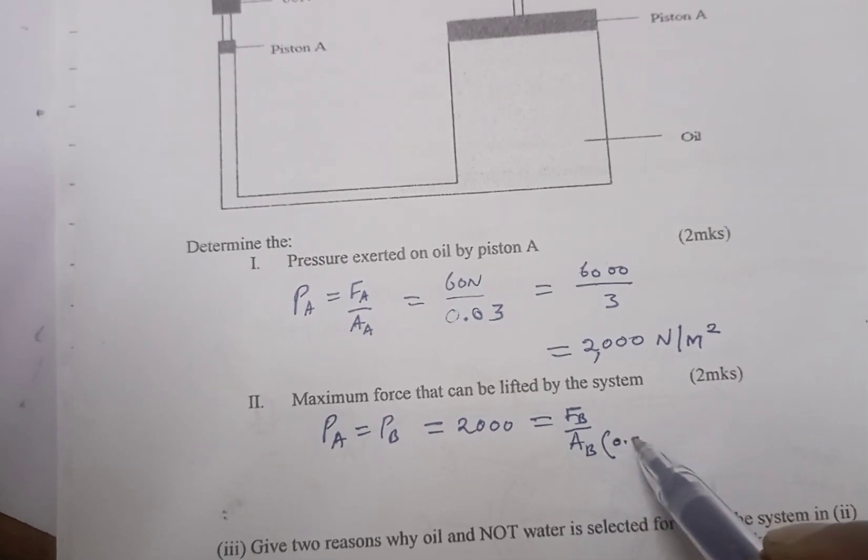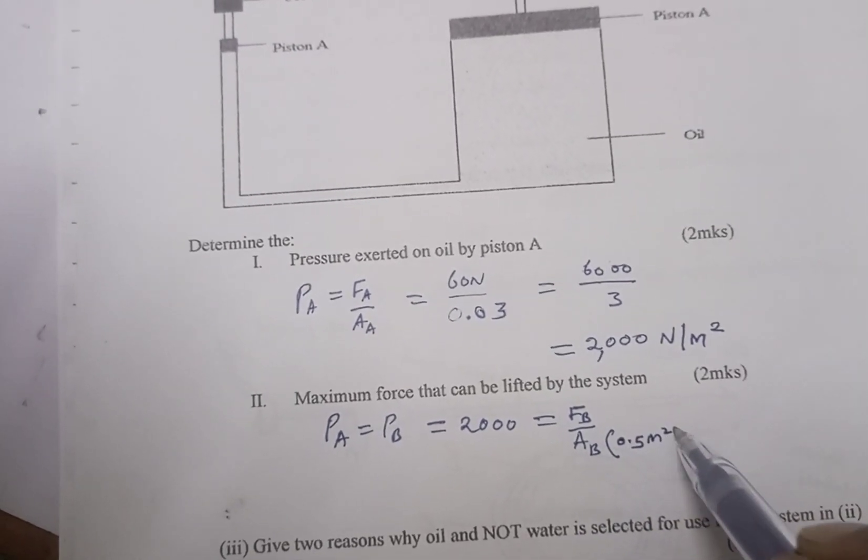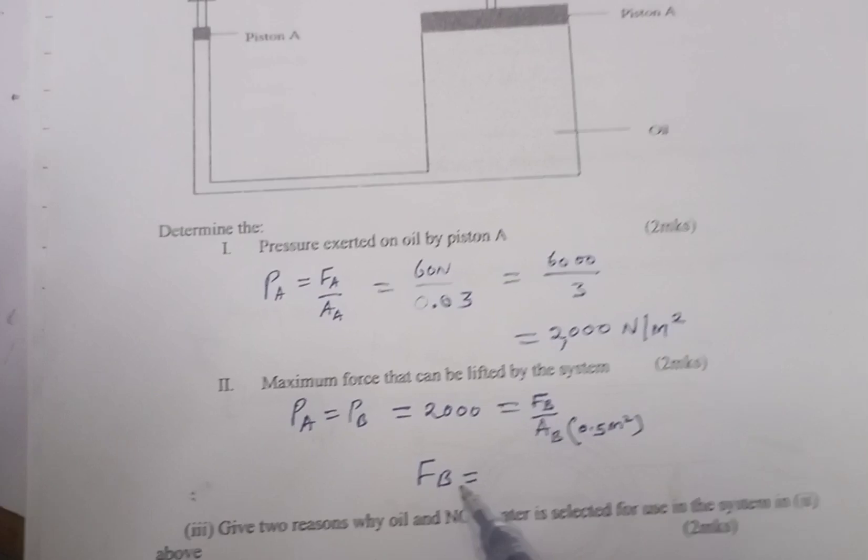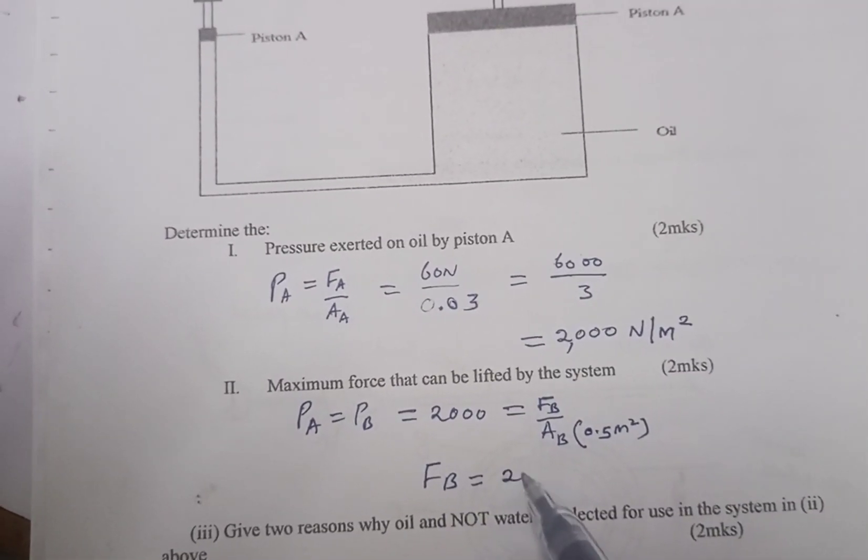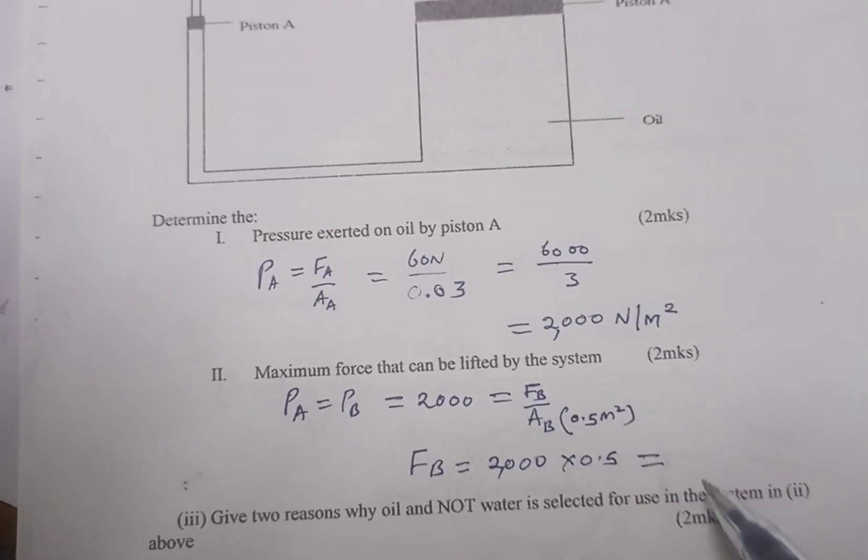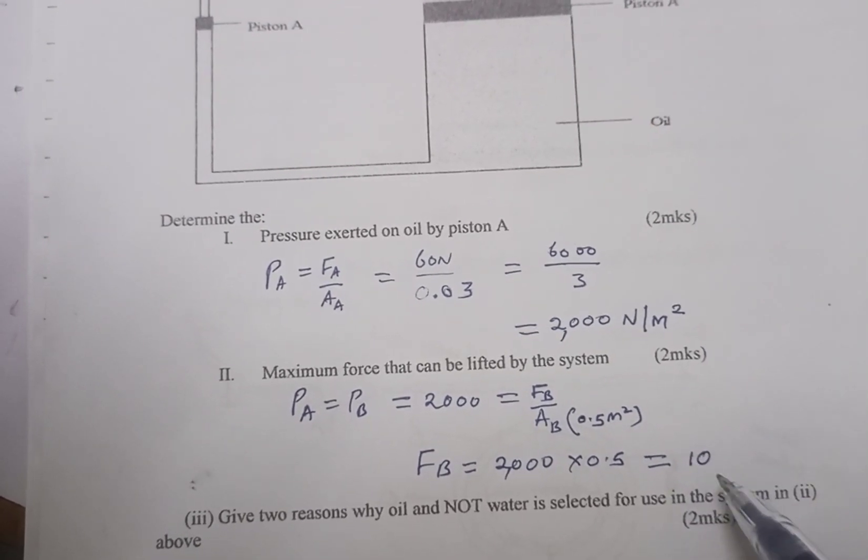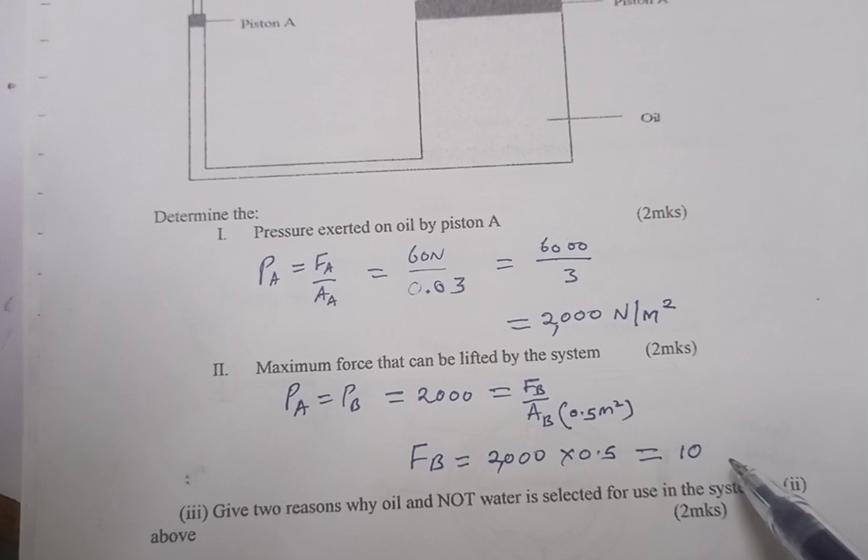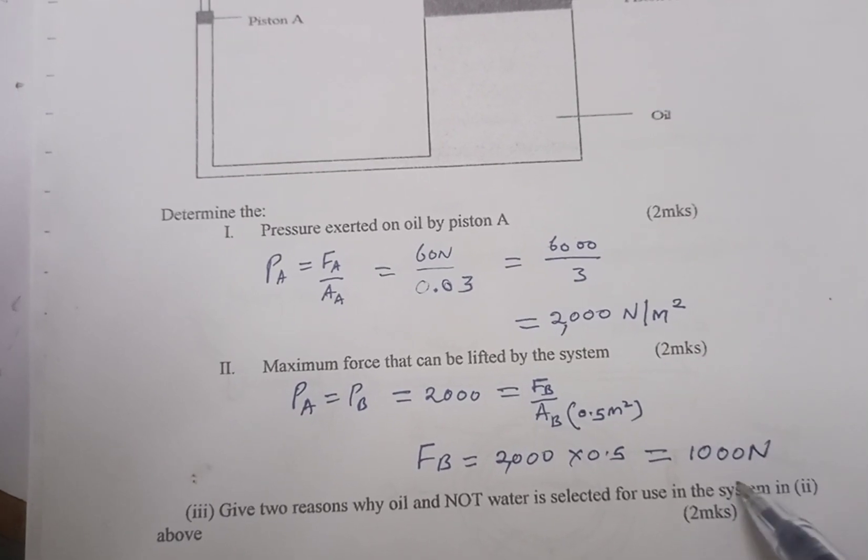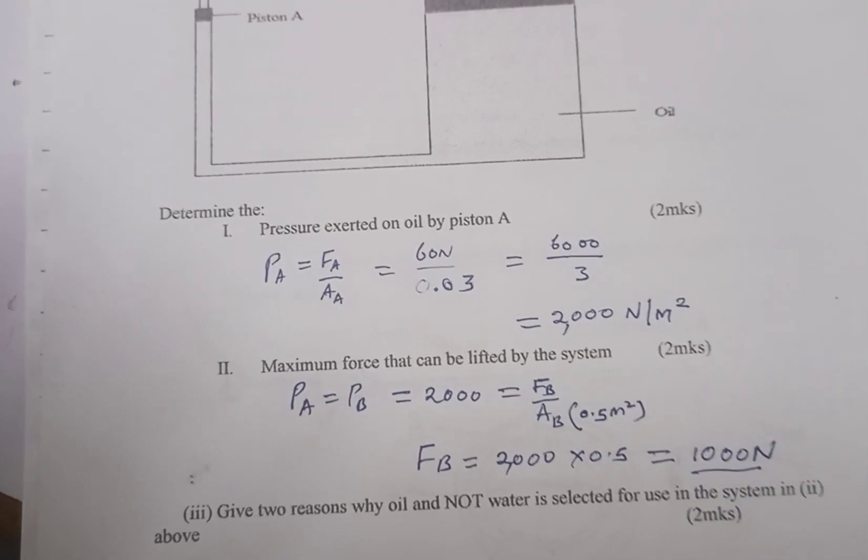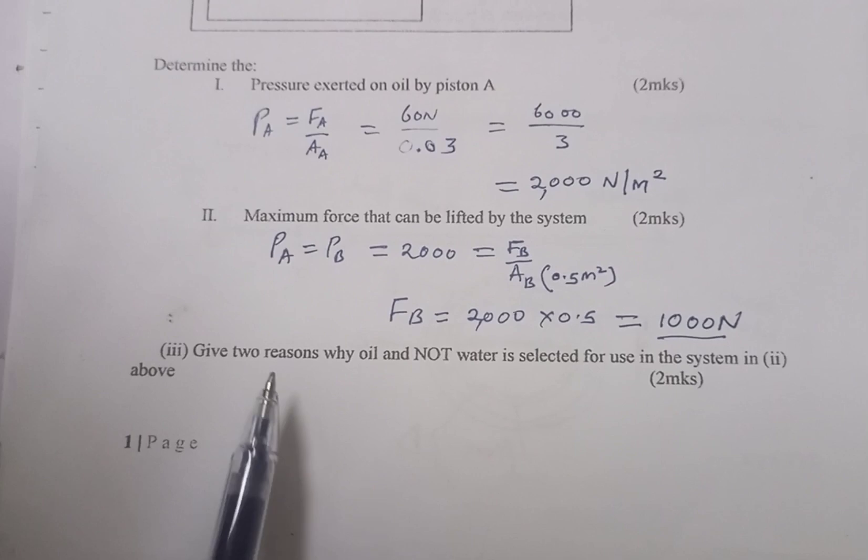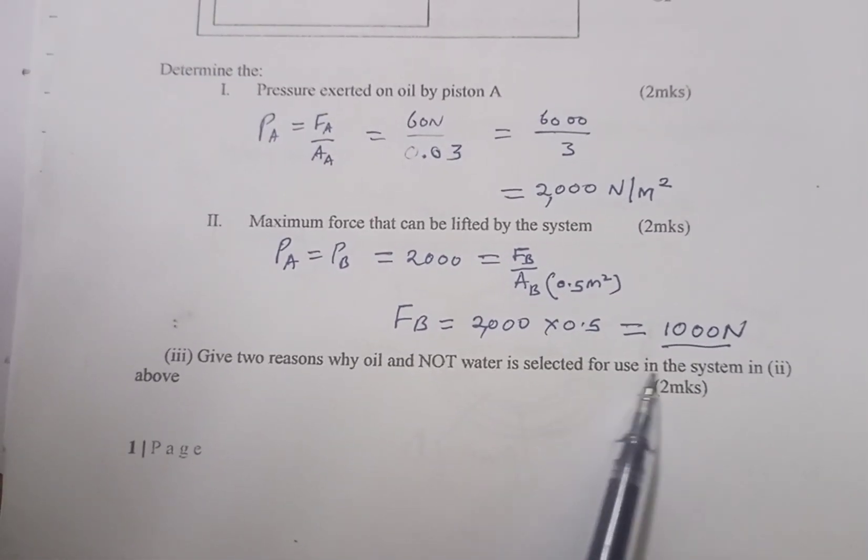We have been provided with 0.5 as the area at B, so force at B will therefore equal 2000 multiplied by 0.5. We are going to get 1000 newtons. Then give two reasons why oil and not water is selected for use in the system.